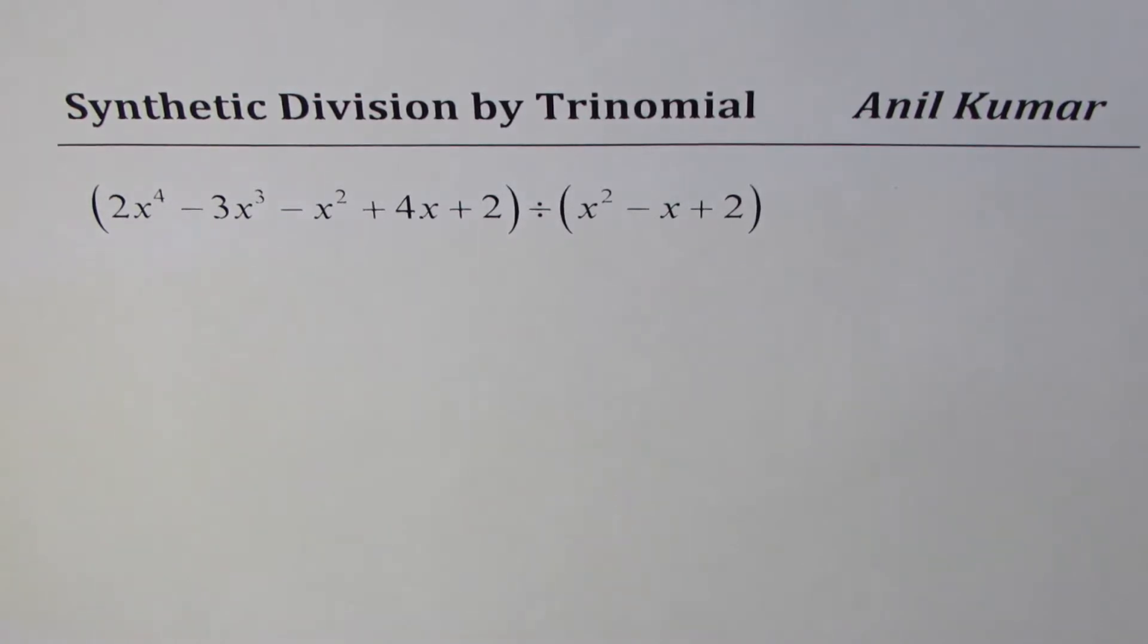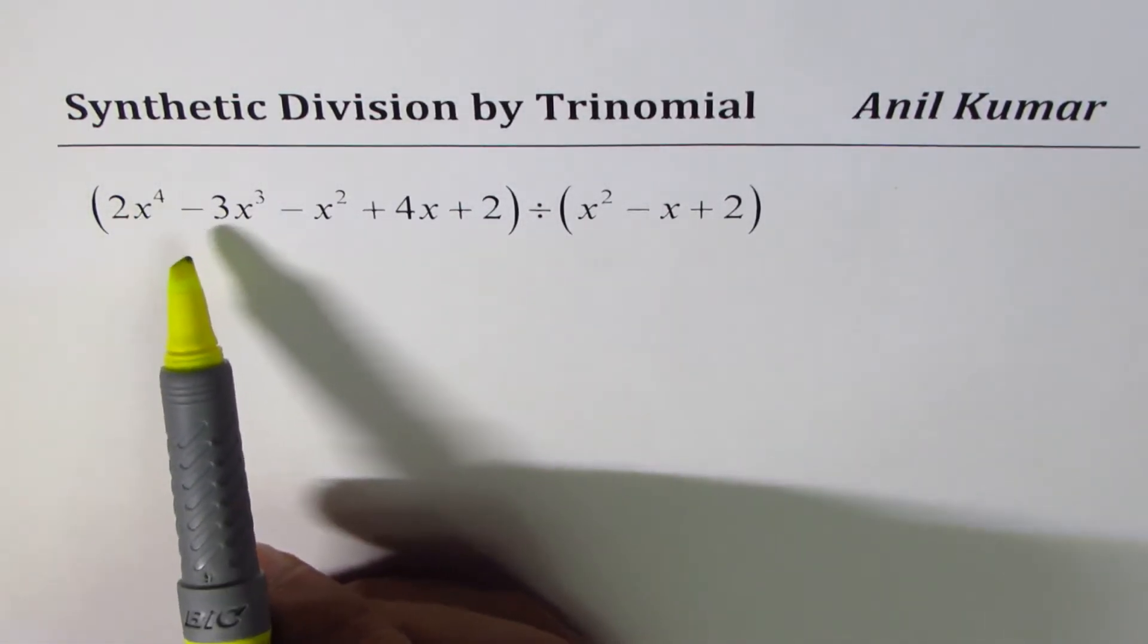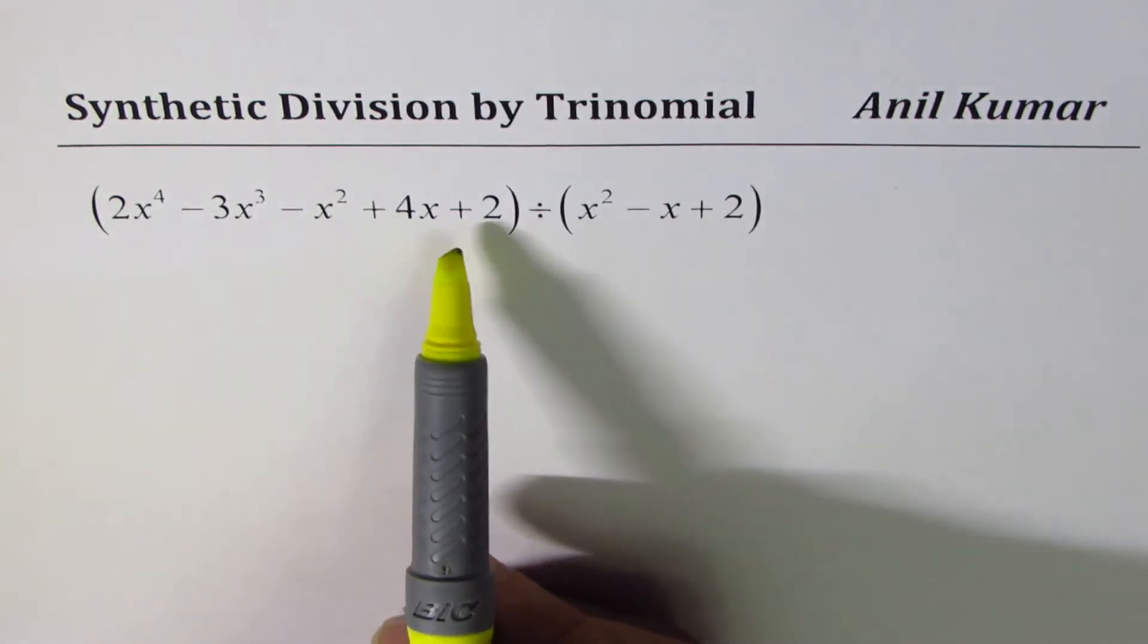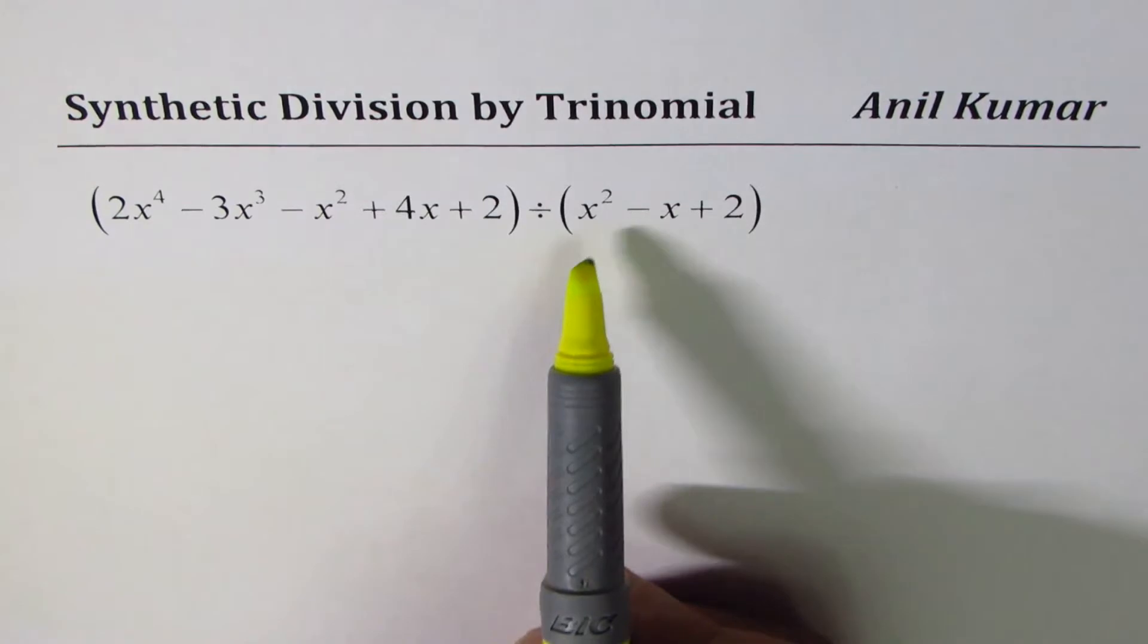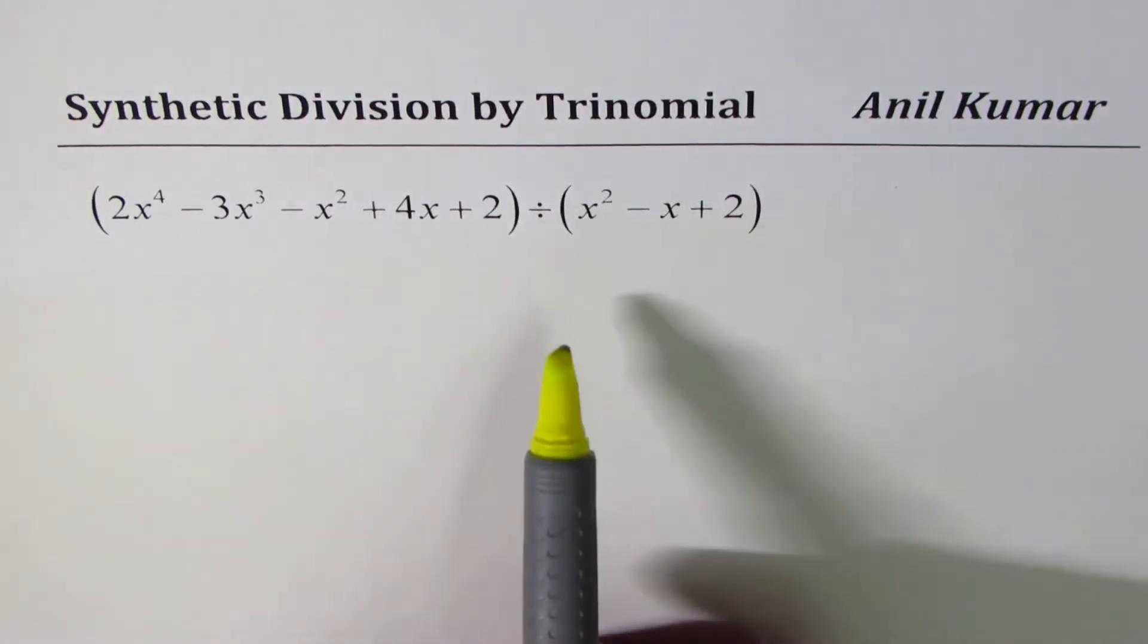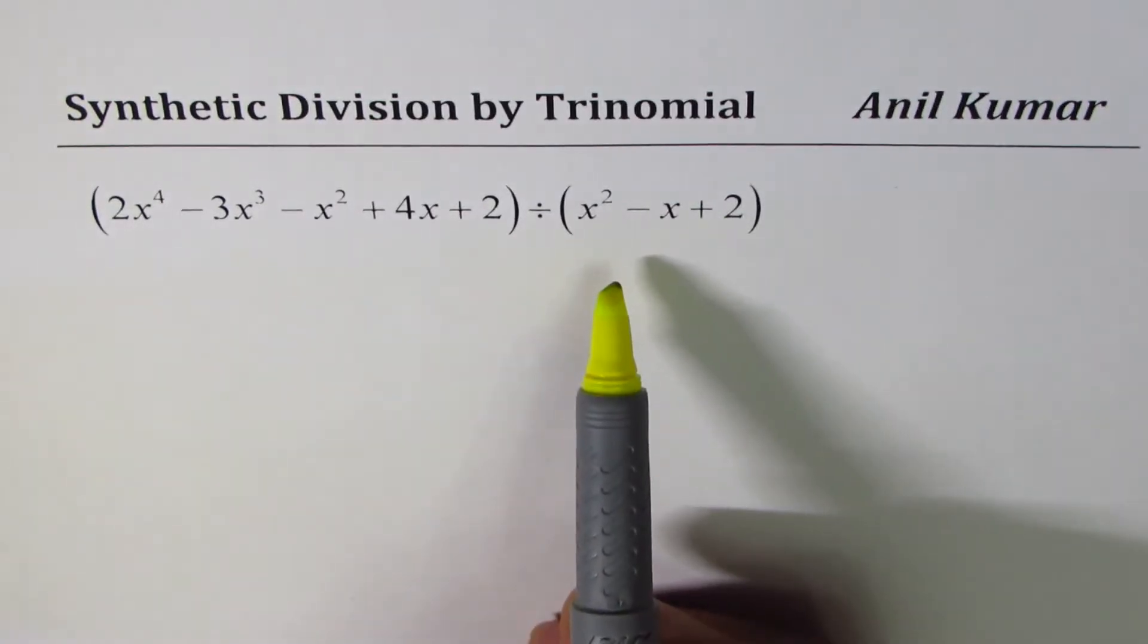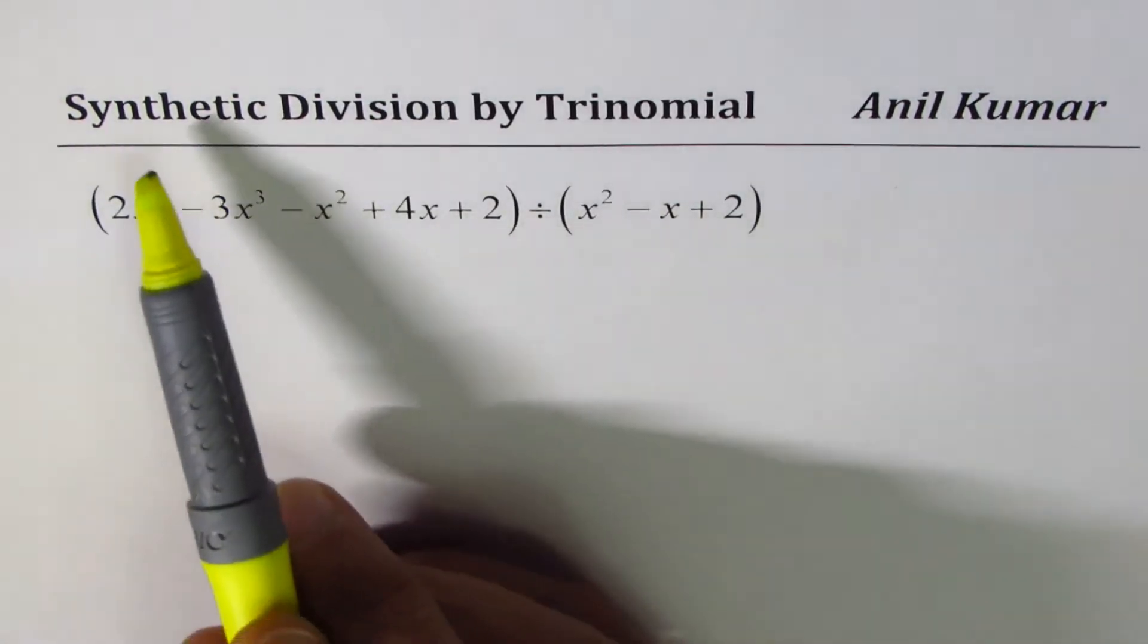I've taken this example. We'll divide 2x to the power of 4 minus 3x cube minus x square plus 4x plus 2 by x square minus x plus 2. As you can clearly see, it's a trinomial quadratic function.